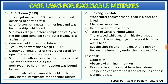Now let us go through important case laws on excusable mistakes. The first is R v Tolson (1889). Tolson married in 1880 and her husband deserted her after a year. She later got news that her husband was lost in a ship which sank. Thinking her husband had died, she got married again before the completion of 7 years. However, her husband came back and put a bigamy case against her. It was held that because Tolson did such act thinking her husband was already dead — a mistake of fact — she had not committed any offense and got immunity under these sections.